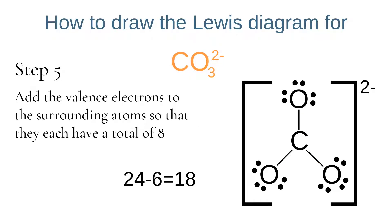We start by adding valence electrons to the surrounding atoms so that they each have a total of eight electrons. Because each oxygen already has two electrons from the single bond, we need to add another six valence electrons to each oxygen, and we always add them as pairs.